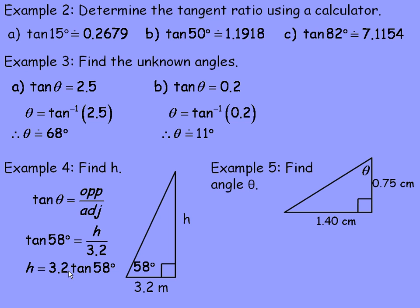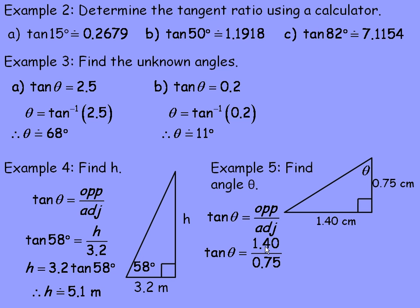The last example asks us to find an unknown angle given two sides — the opposite and the adjacent. The angle theta is at the top, so the opposite side is 1.4 and the adjacent side is 0.75. Using tan theta equals opposite over adjacent: tan theta equals 1.4 over 0.75, which equals approximately 1.8667. Taking the inverse tan of 1.8667 gives theta approximately equal to 62 degrees. That's the end of the lesson.